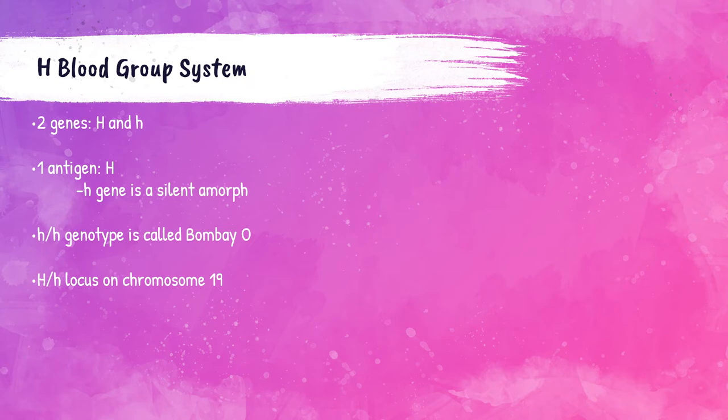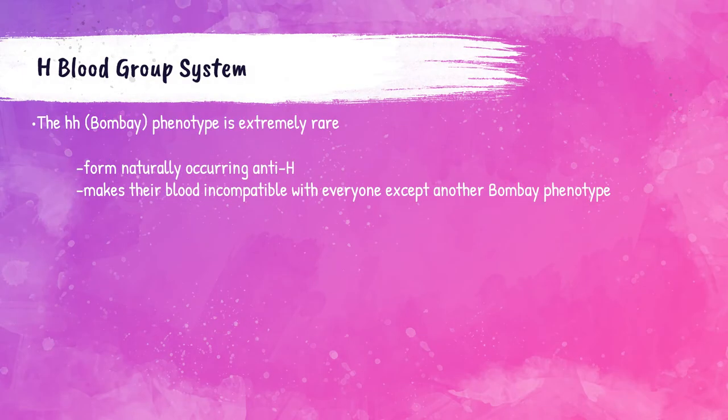The H antigen must be present in order to form either A or B antigens from the ABO blood group system. When no H gene is inherited — meaning a patient gets one h gene from each parent — no H antigen can be formed. This genotype is called Bombay-O. The hh phenotype, or Bombay-O phenotype, is extremely rare. It was first discovered in the 1950s in Bombay, India, hence the name.